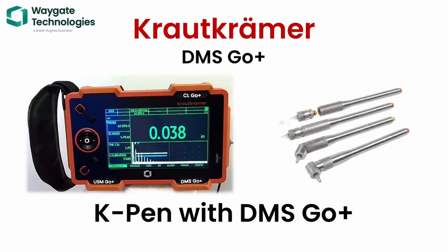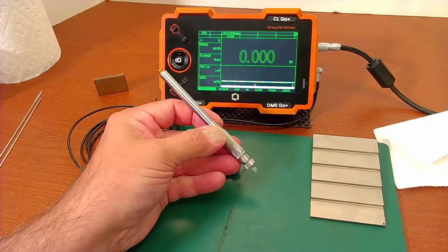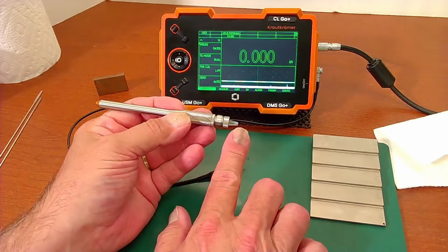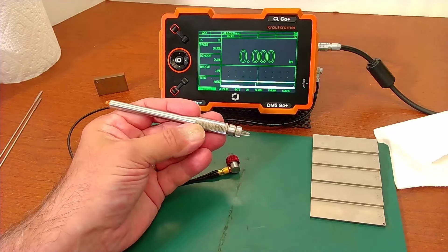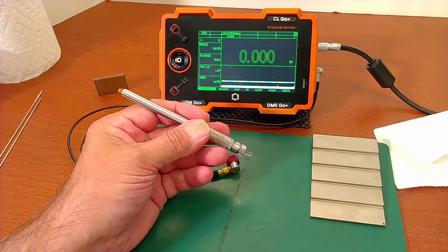Hi folks, welcome back to Waygate Technologies. This is Dan here for the Krautkramer instruments, and in particular the DMS Go. I have a special application. I had a question from a customer the other day particularly asking about K-Pen probes, so delay tip, very small contact area, pen-shaped probes. The customer is asking if these could be used with the DMS Go.